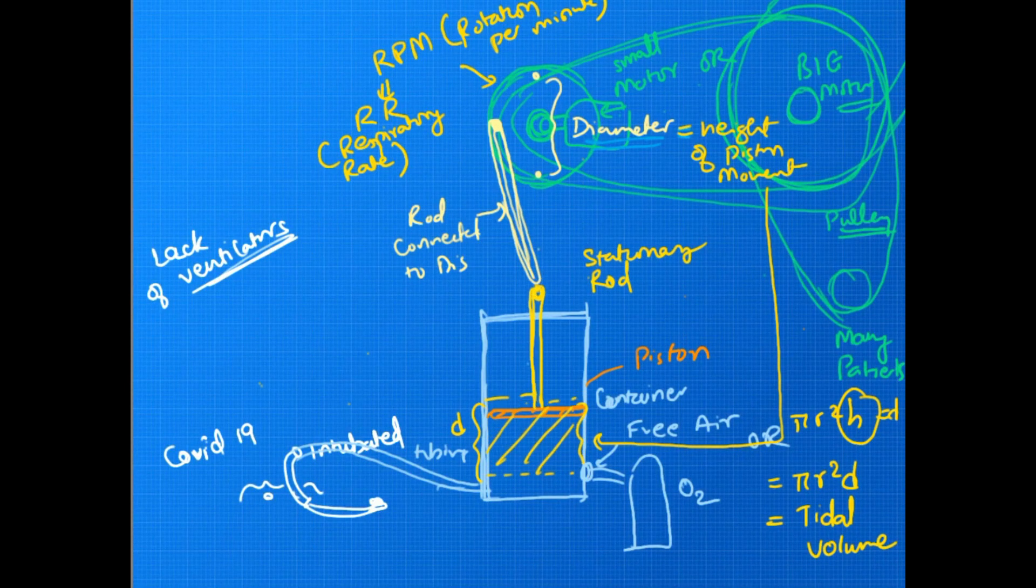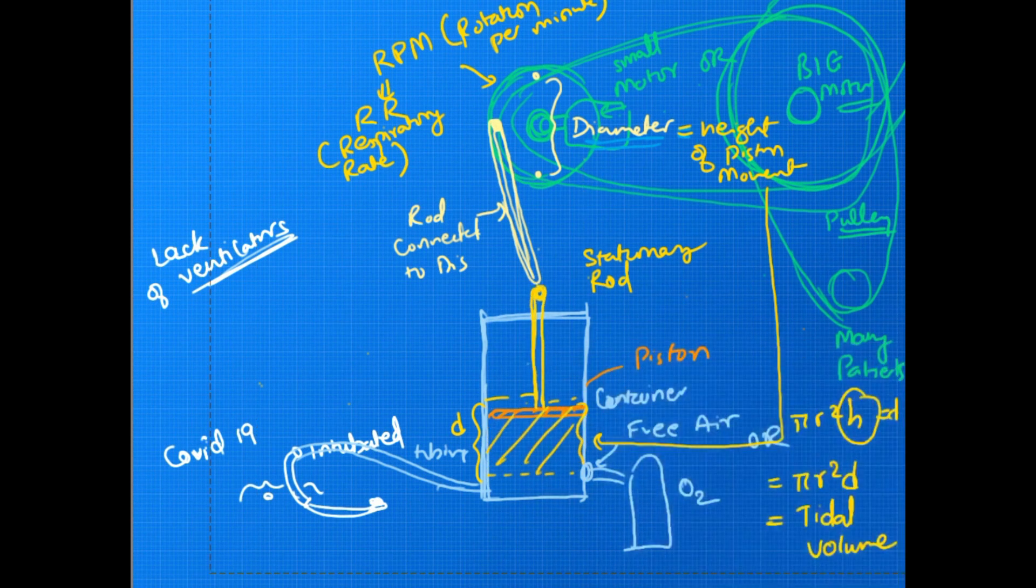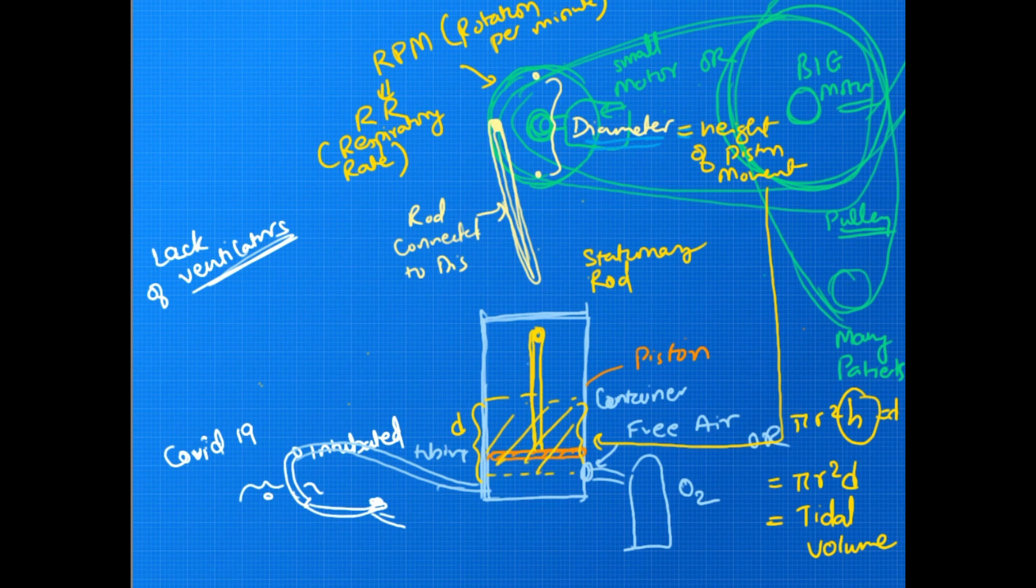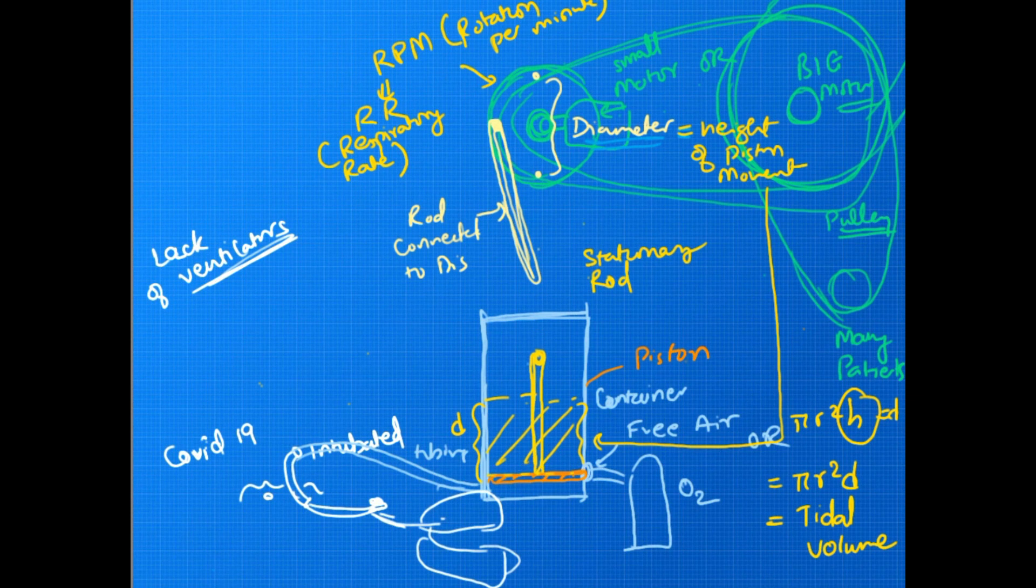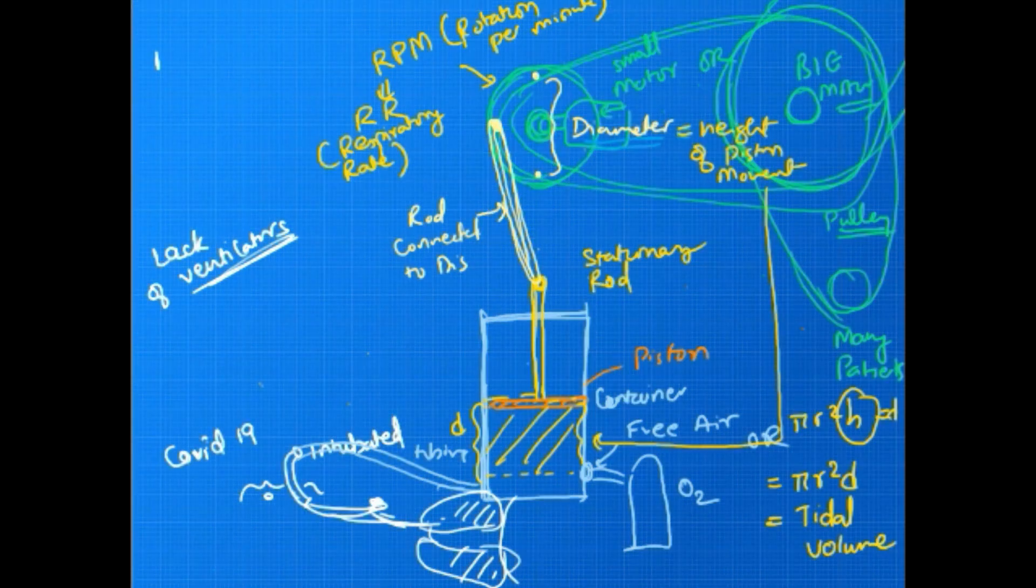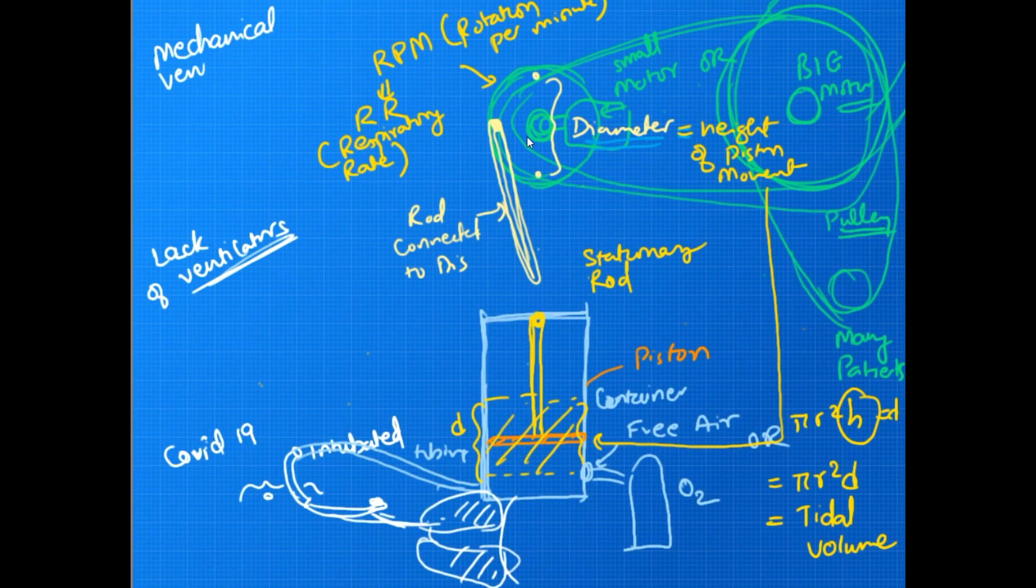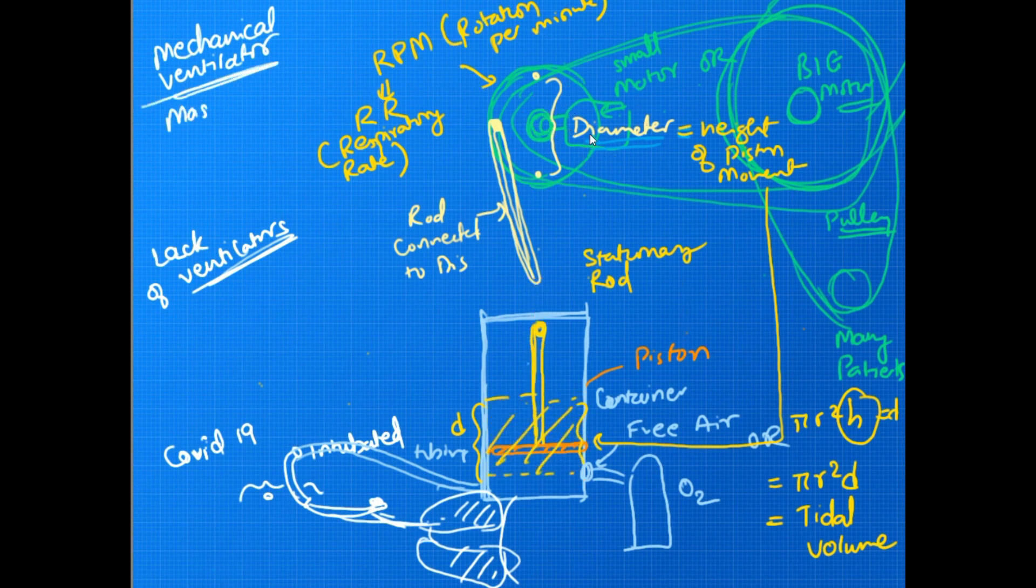Depending whether the patient needs hyperventilation or the patient needs more tidal volume or if it's a child, then the patient will be needing a lower tidal volume. We will be able to deal with that by just altering either the diameter of this disc or by changing the rotation per minute of this disc. Simply by changing the disc, either its diameter or its speed, we will be able to control two most important variables here.